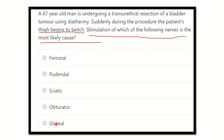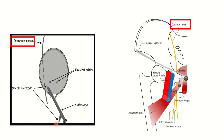Here we can see the bladder, and there is a nerve very close to the bladder — this is the obturator nerve. During any procedure, the instrument may stimulate the obturator nerve. In the second picture, we can see the obturator nerve is very close to the bladder, and it finally passes through the obturator foramen and reaches the thigh.